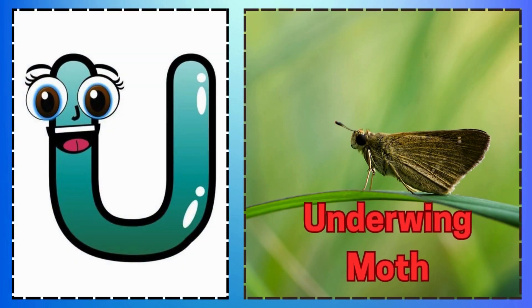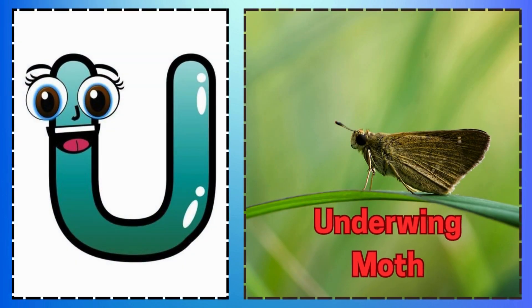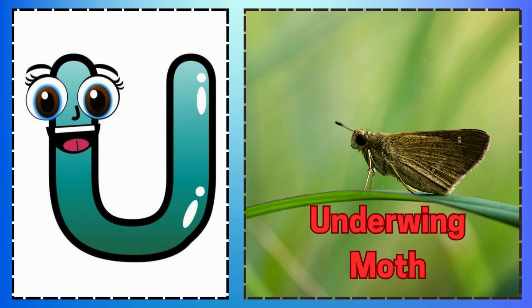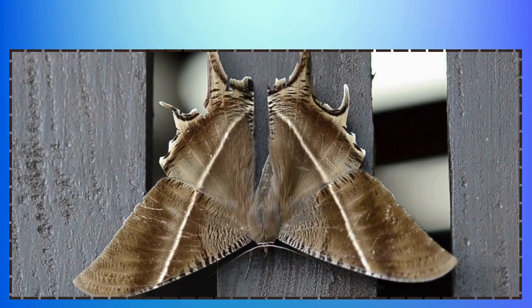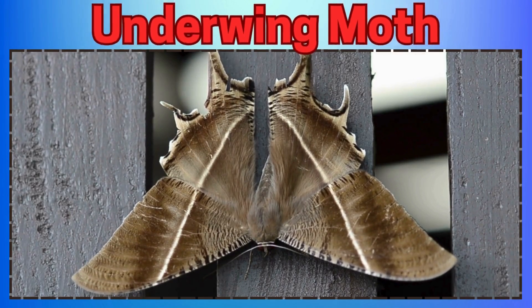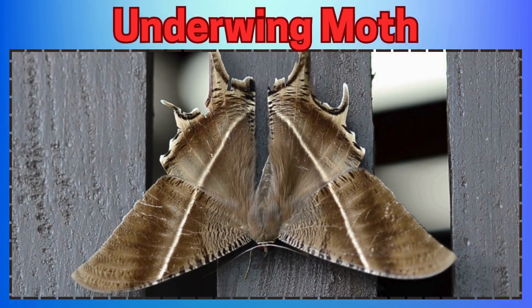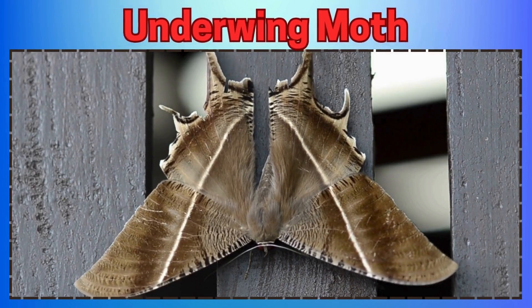U is for Underwing Moth. M is for Mosquito Buzzing in the Air. O is for Orchard Spider Weaving its Thread. P is for Praying Mantis Turning its Head.